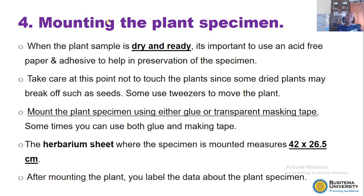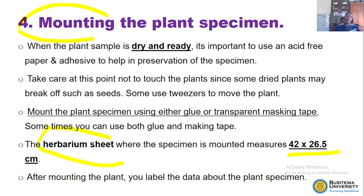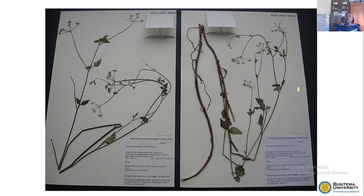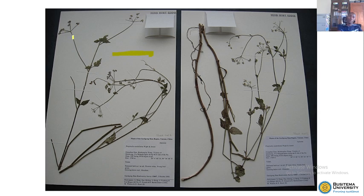The next step is mounting. When mounting, we mount that particular sample that you have pressed onto a herbarium sheet. The herbarium sheet measures 42 by 26.5 centimeters, and it is always white in color. This is the sample that was collected, prepared, and pressed.